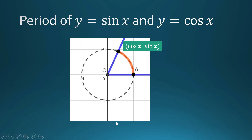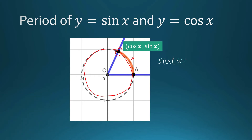Suppose we trace a longer angle — not just x. Upon reaching x, we rotate one more full revolution, and the endpoint of that arc falls on the same point. That longer arc has measure x + 2π. So sine(x + 2π) equals the second coordinate of that same point, which is sine(x). That is why sine and cosine are described as periodic functions.